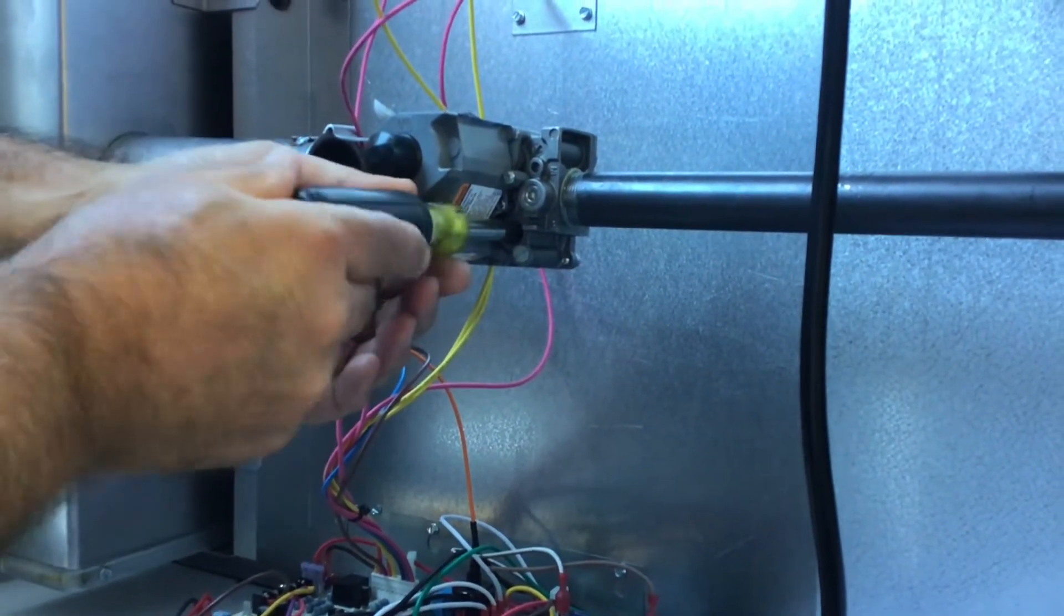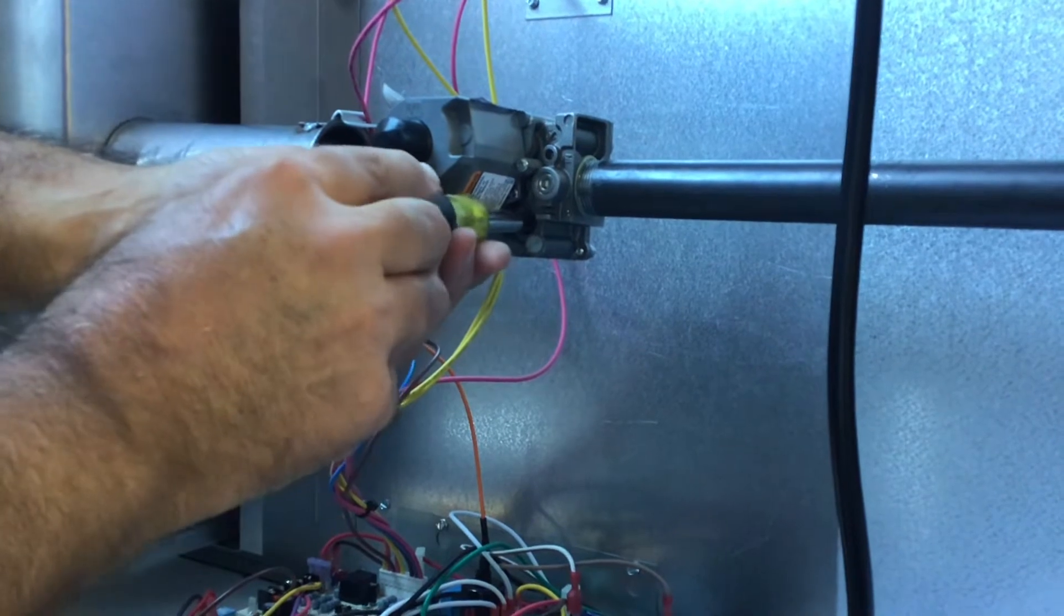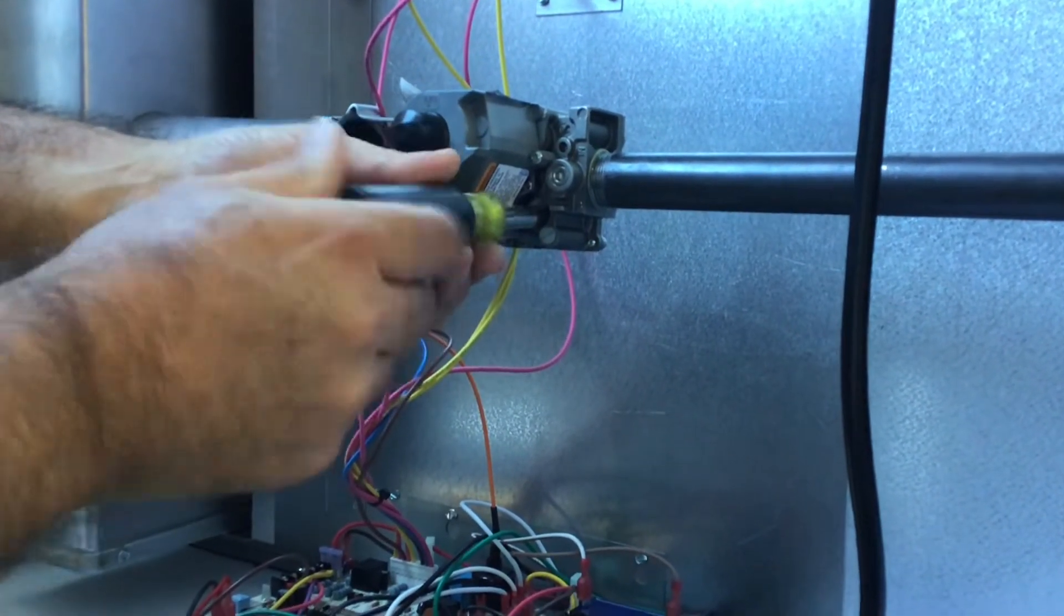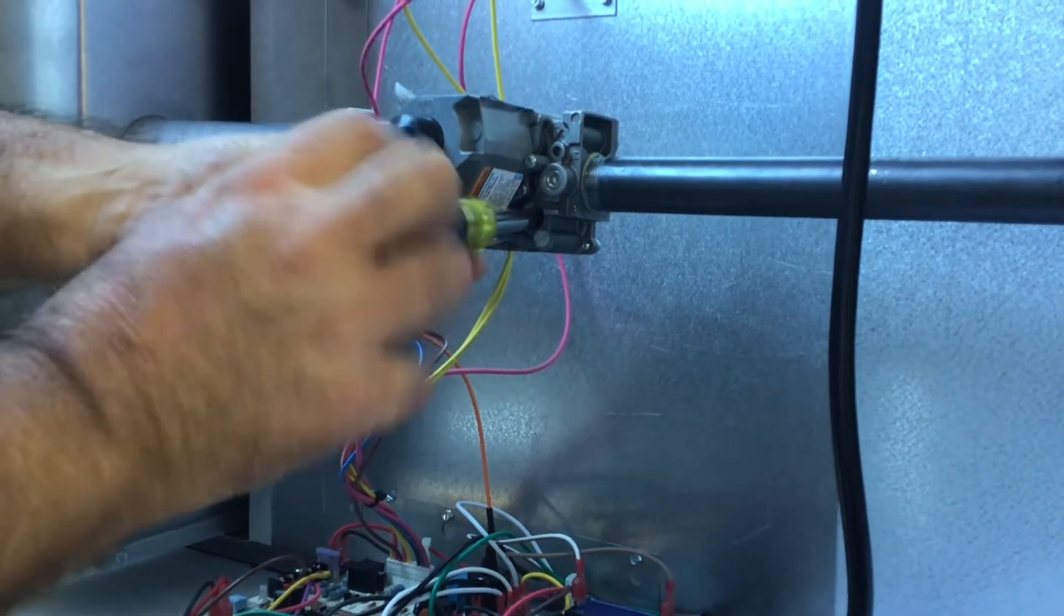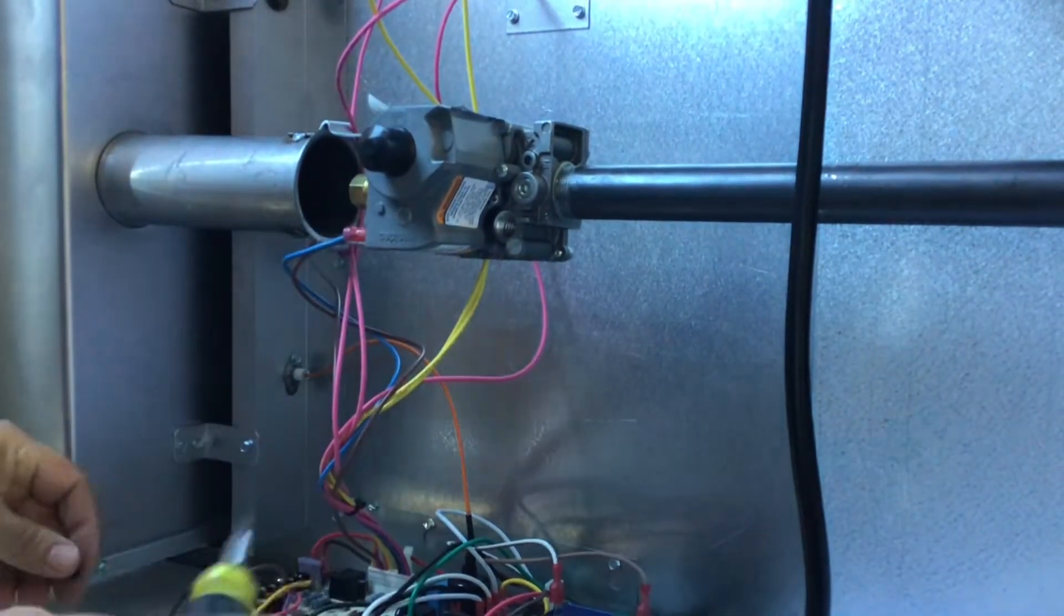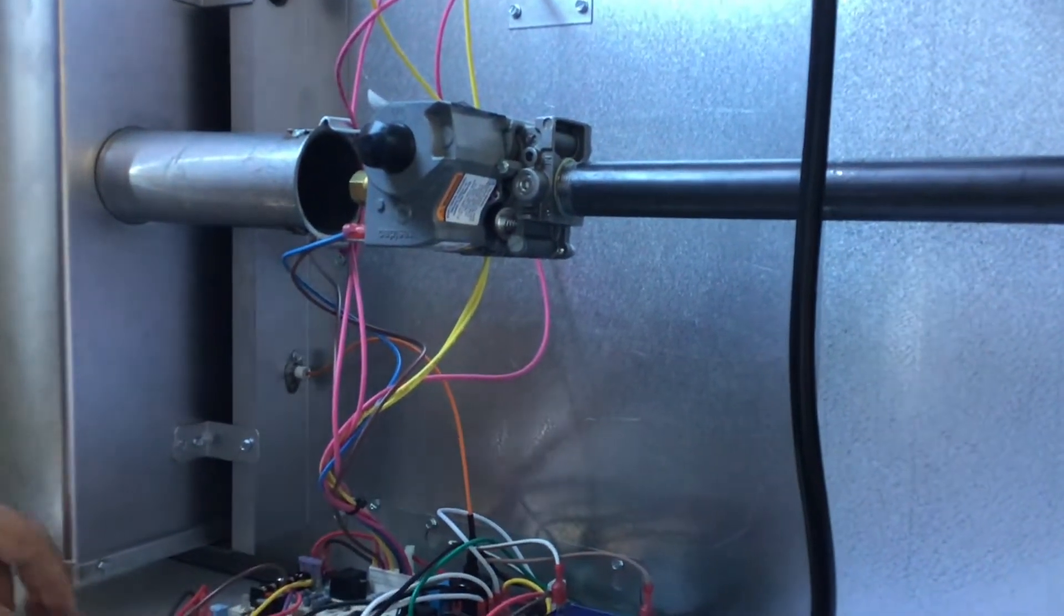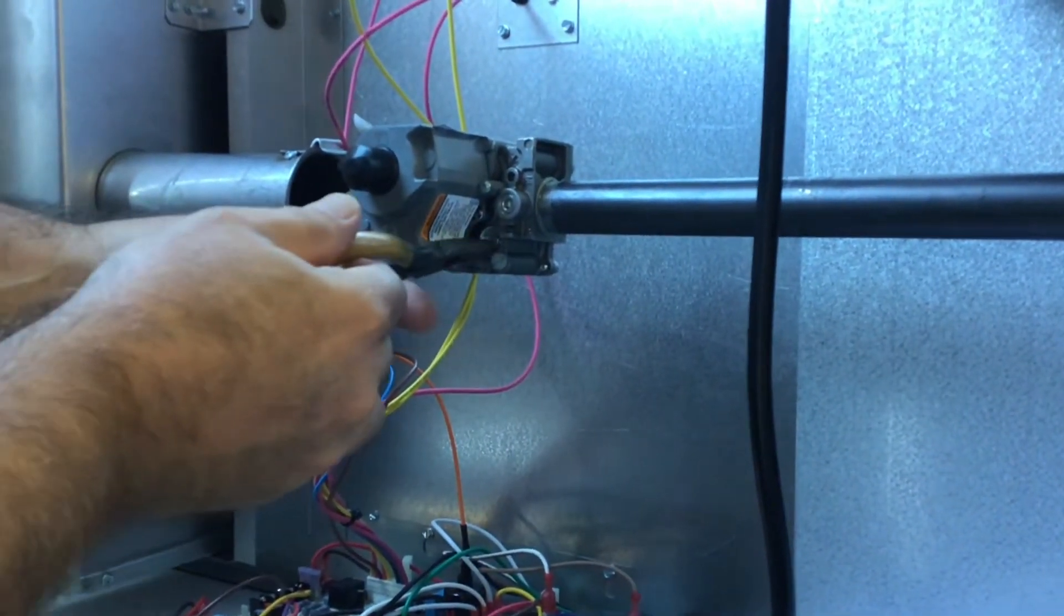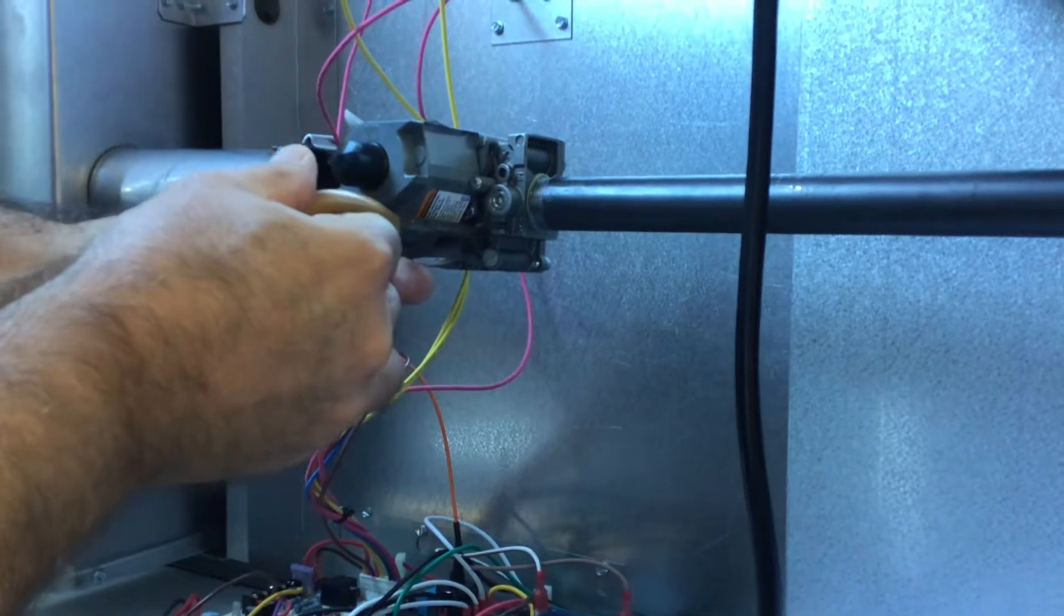Then we're going to put our screwdriver in and back out the set screw all the way out. The set screw, now with your needle nose pliers, very gingerly remove the spring.